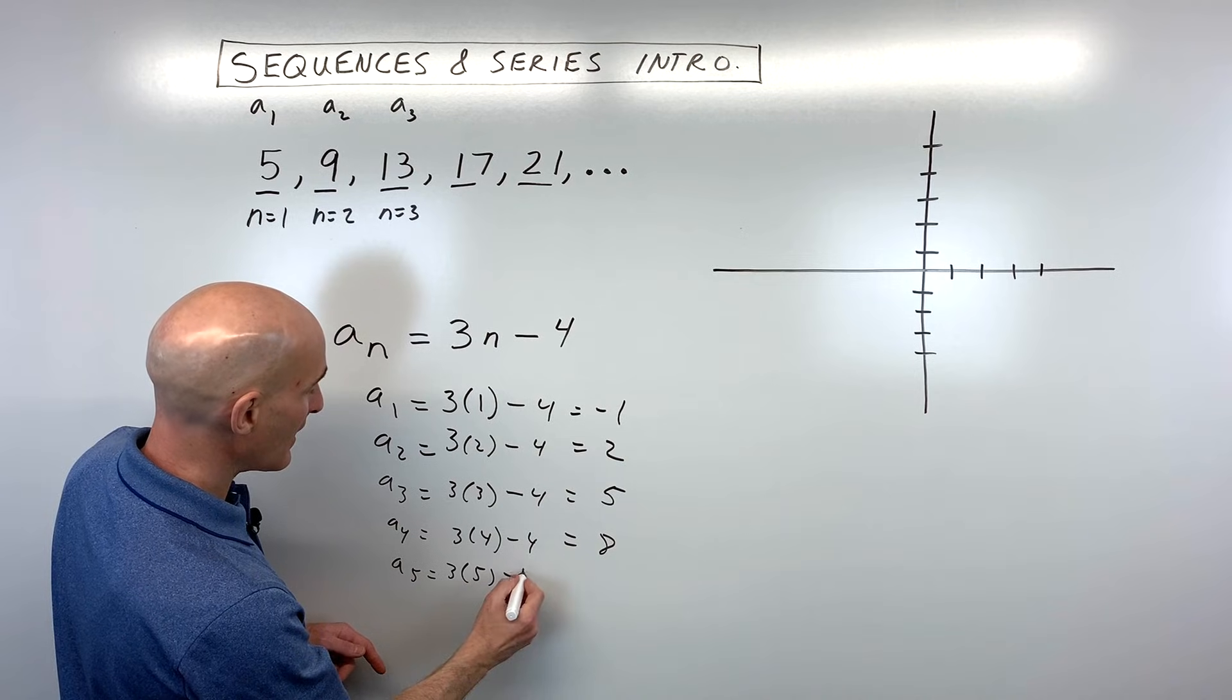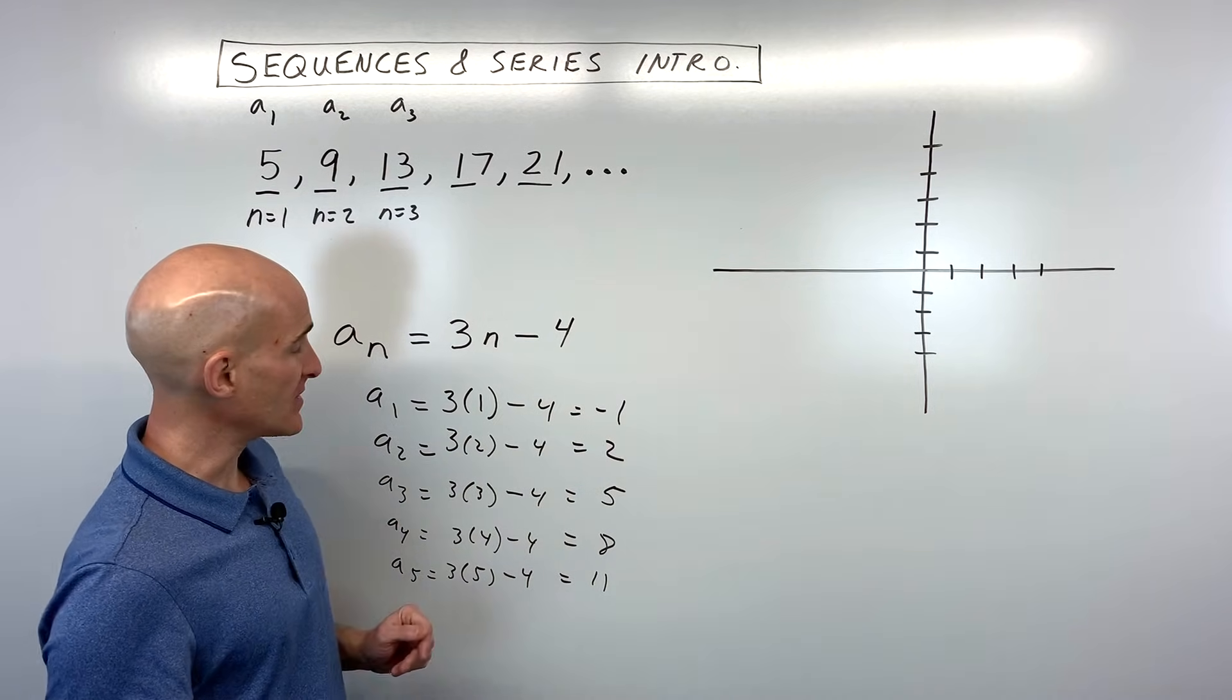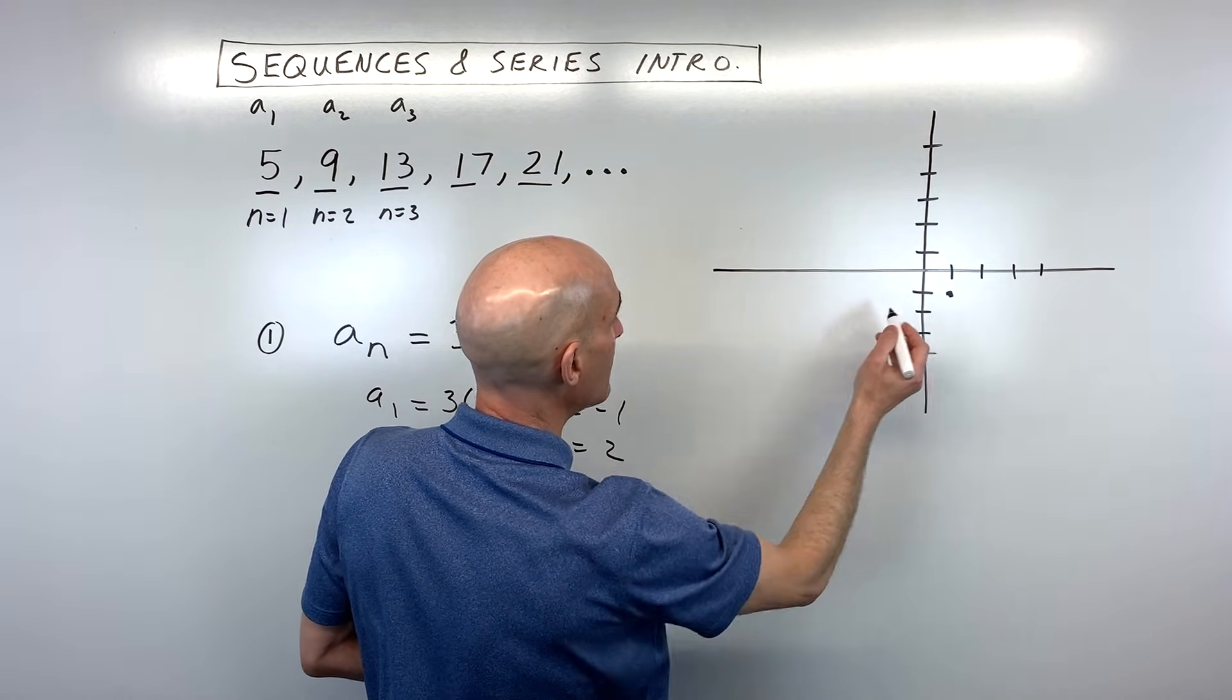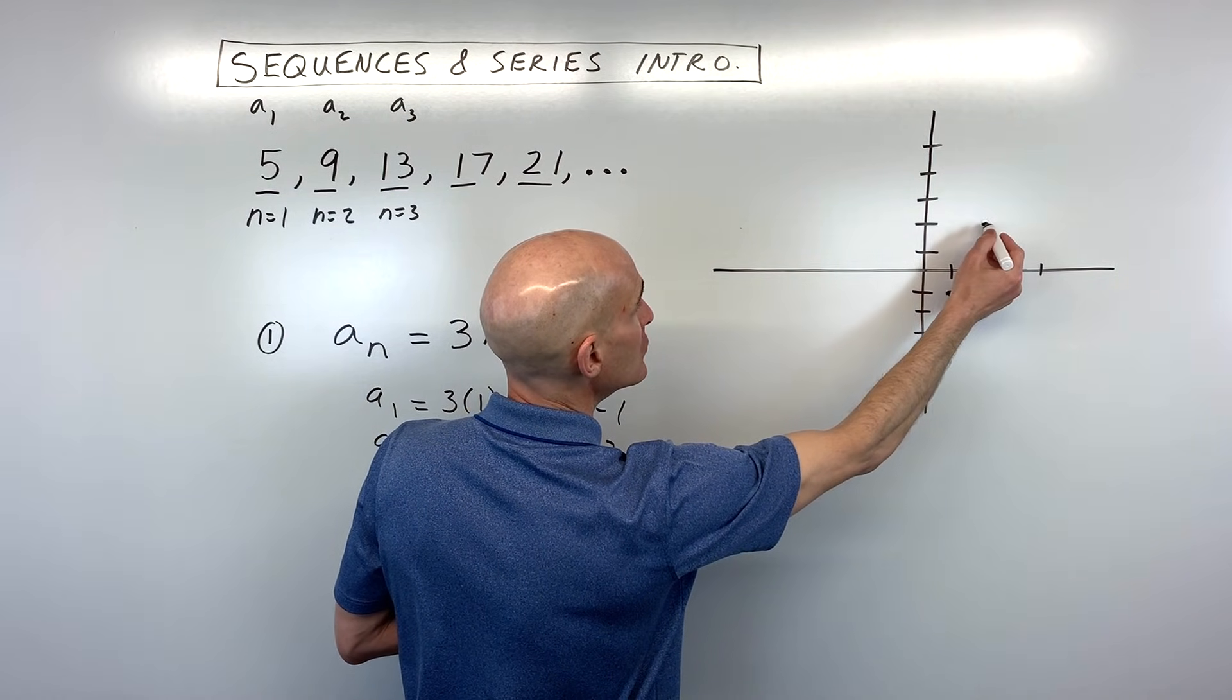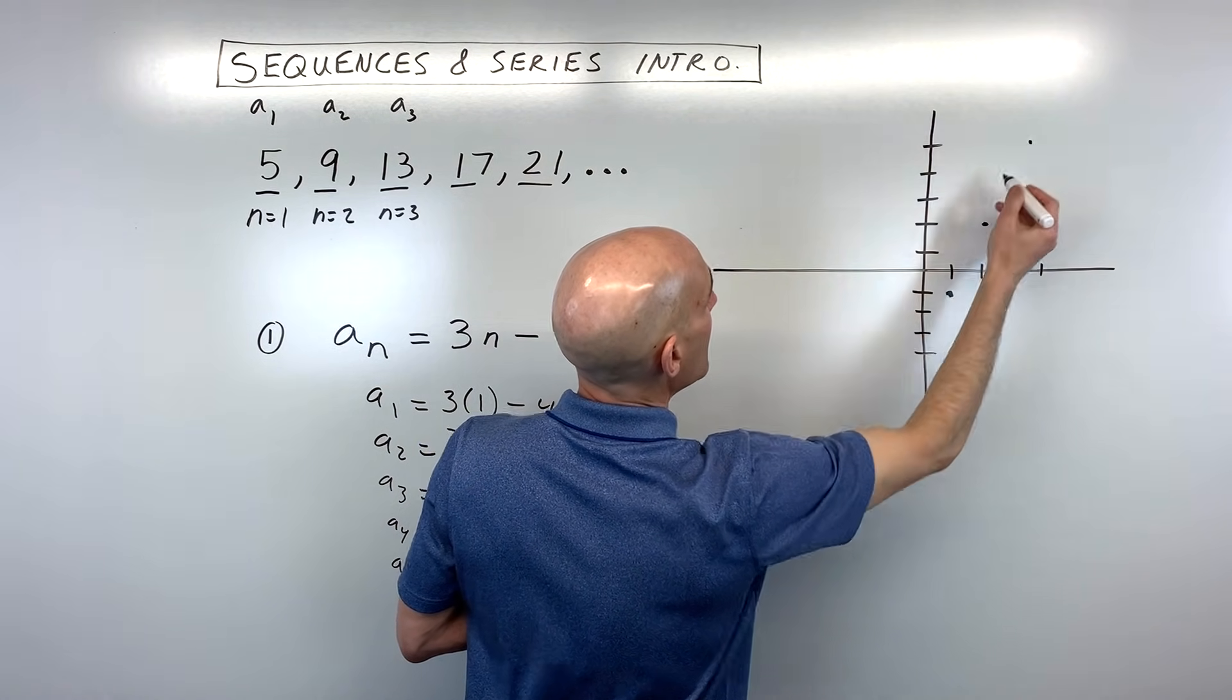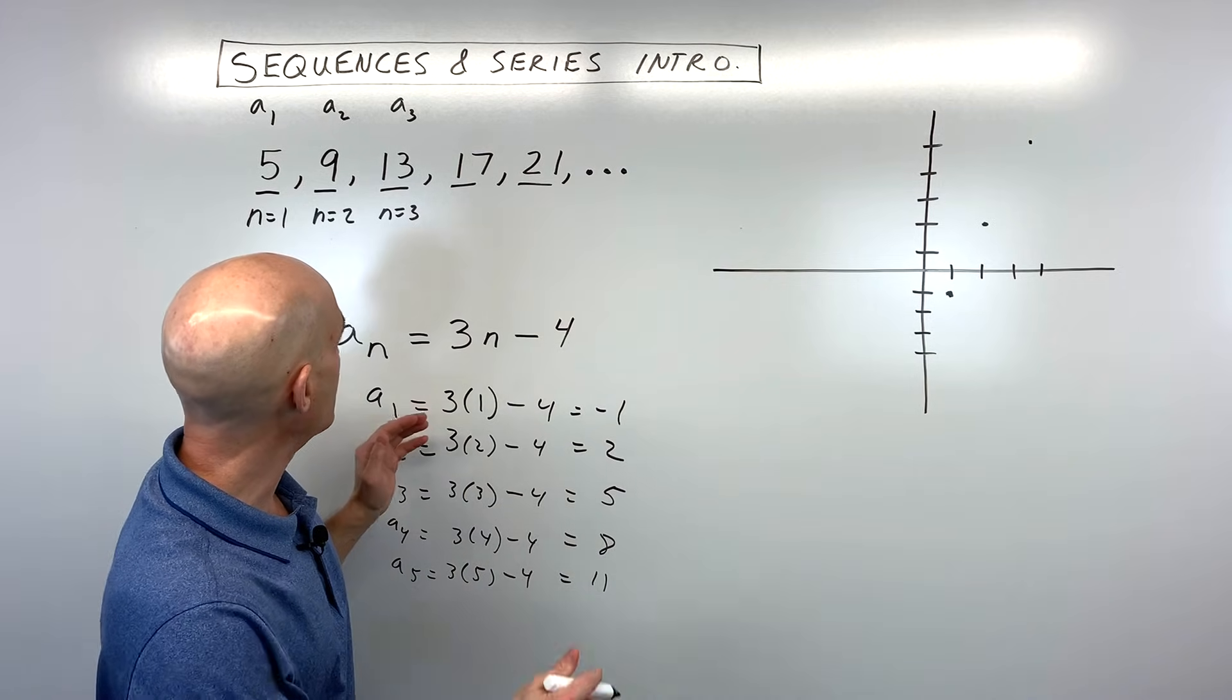So now what I want to show you is, say we go ahead and plot these points. So what this represents is the first term is negative 1. So over here at 1, we're down here at negative 1. The second term is 2, so I'm going to go 2 and up 2. And the third term is 5, so that's going to be 3, that's 1, 2, 3, 4, 5.